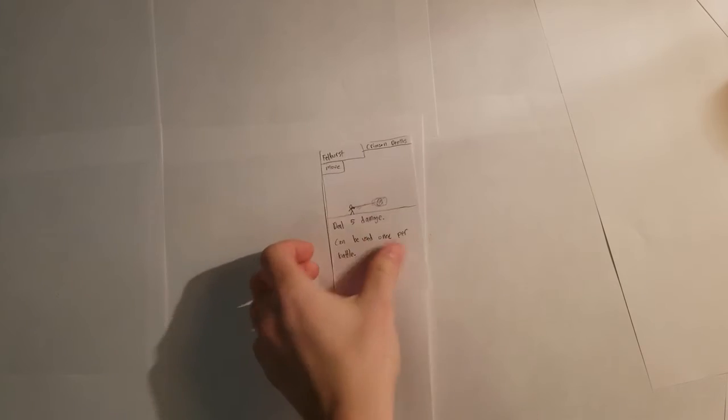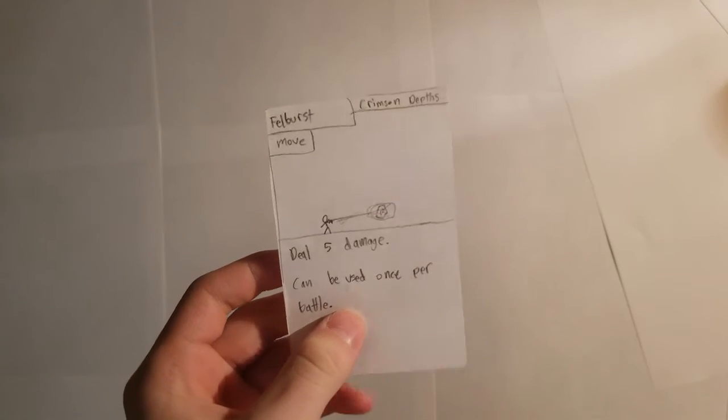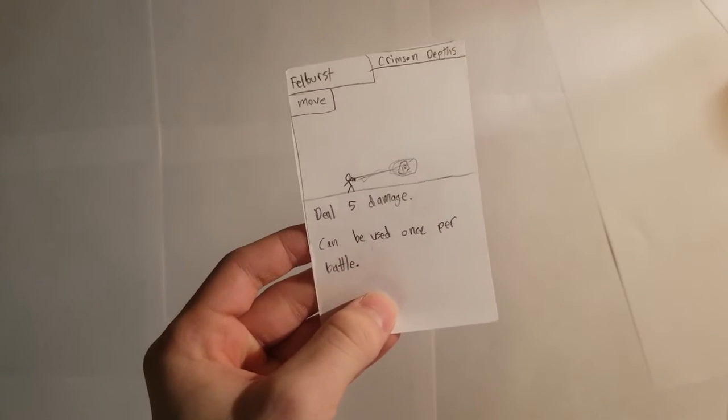The first way to make moves more aggressive is to make them single use per battle. This move gets to deal a whopping 5 damage - that's higher than normal - but can only be used once every battle.